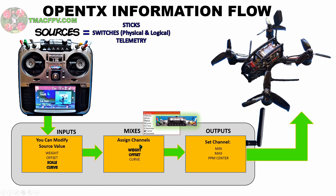The sources for your Mixes menu could be input lines from your Inputs menu, or they can also be switches and various other things. Normally I use the Mixes menu to assign transmitter switches to receiver channels to activate different things in Betaflight. Once your sources have been mapped to receiver channels in the Mixes menu, that information is passed to the Outputs menu, where your output channels receive it and convert it to electrical pulses which are then transmitted to your quadcopter's receiver.